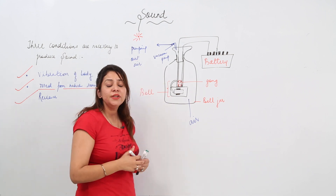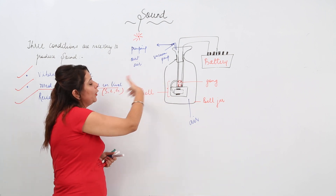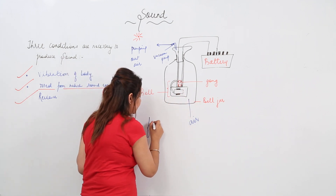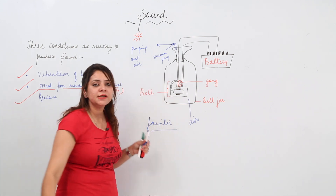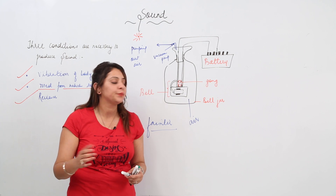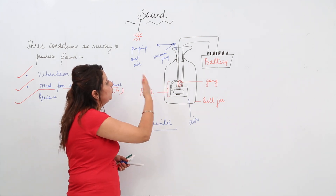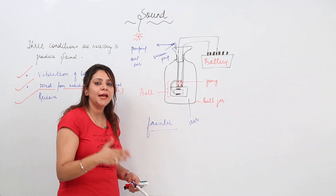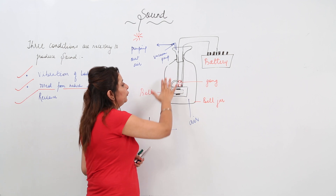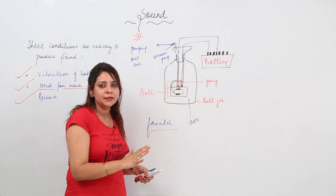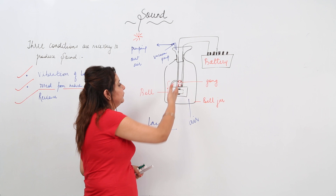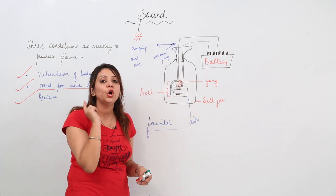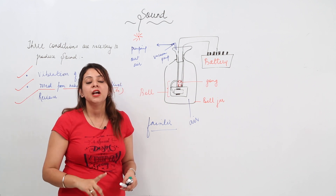As we pump more and more air out, the sound of the ringing bell goes on becoming fainter. Fainter means we can still hear the sound but it is not as loud as it was earlier. As more and more air is taken out, the sound keeps becoming fainter and fainter.